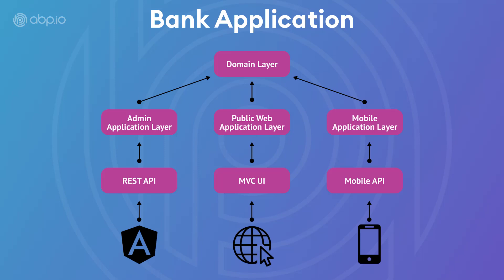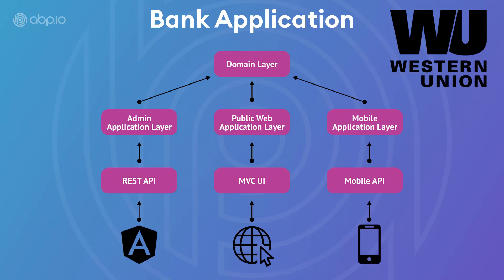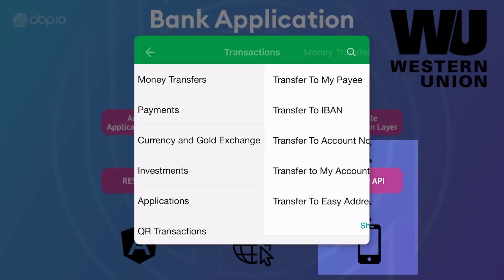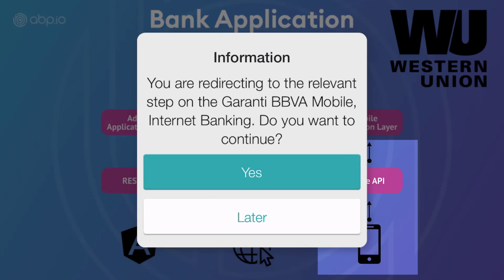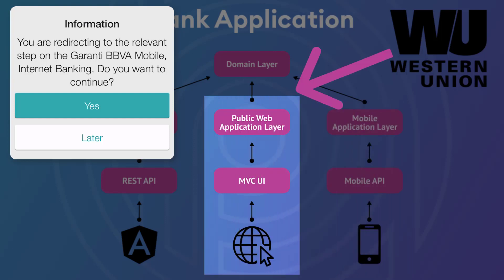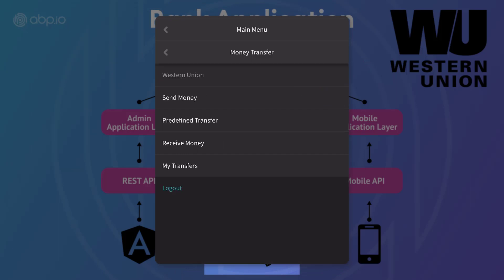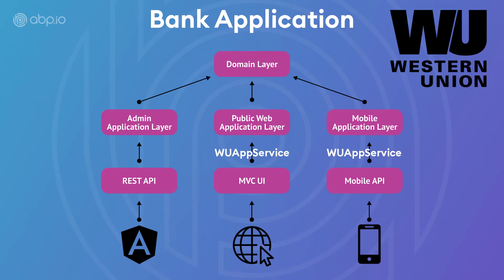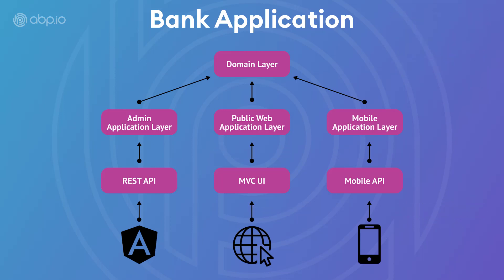There is, however, some logic that could be different when we implement it, depending on what project we're working on. Say for example the Western Union service. If you want to send or receive money using the mobile application, you tap the Western Union button and it tells you it will transfer you to the MVC UI application for that service. The Western Union app service for the mobile application redirects you to the web application, and once you tap Western Union on the web application, the API connects. The Western Union app service on the mobile application is different from the Western Union app service of the MVC UI web application — and this is how precise domain-driven design is.